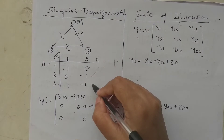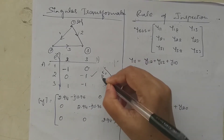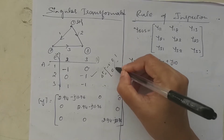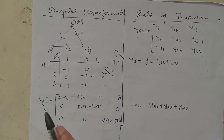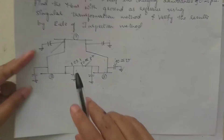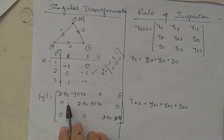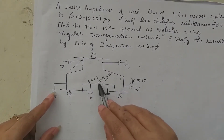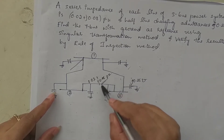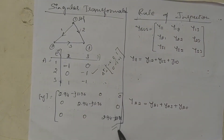After getting the bus incidence matrix A, I find the transpose A^T, which is: [-1, 0, 1; 0, 1, 0; -1, -1, 0] — wait, corrected: the transpose matrix entries are [-1, 0, 1; 0, 1, -1]. Next, I find matrix Y, the primitive admittance matrix. Since there is no mutual coupling, Y is a diagonal matrix. Each element has impedance 0.02 + j0.08, so taking the reciprocal gives 2.94 - j11.76 per unit.